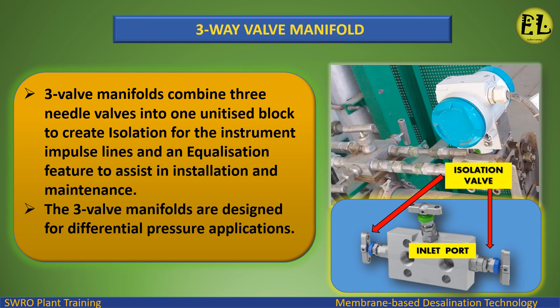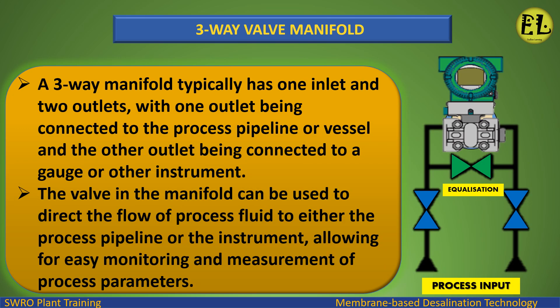Three-way valve manifold: three-valve manifolds combine three needle valves into one manifold block to create isolation for the instrument impulse lines and an equalization feature to assist in installation and maintenance. The three-valve manifolds are designed for differential pressure applications. A three-way manifold typically has one inlet and two outlets, with one outlet connected to the process pipeline or vessel and the other connected to a gauge or other instrument. The valve in the manifold can be used to direct the flow of process fluid to either the process pipeline or the instrument, allowing for easy monitoring and measurement of process parameters.